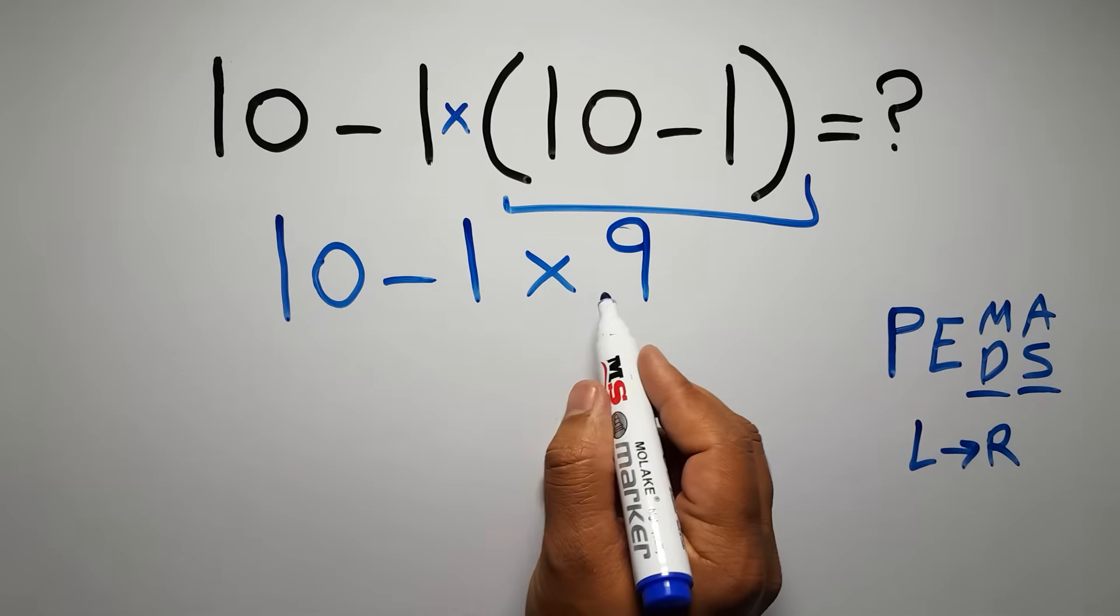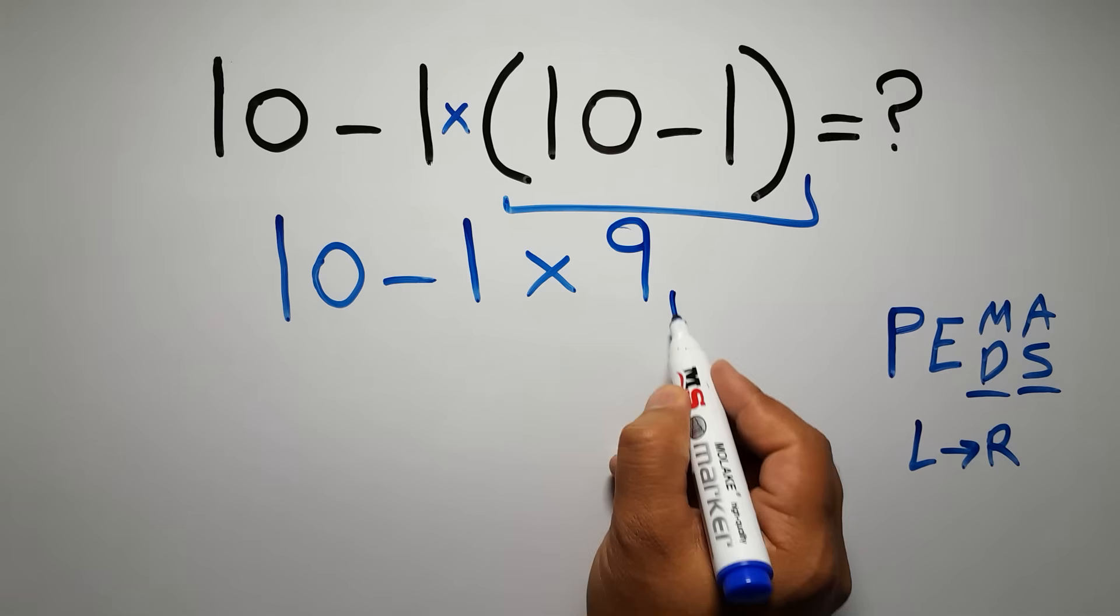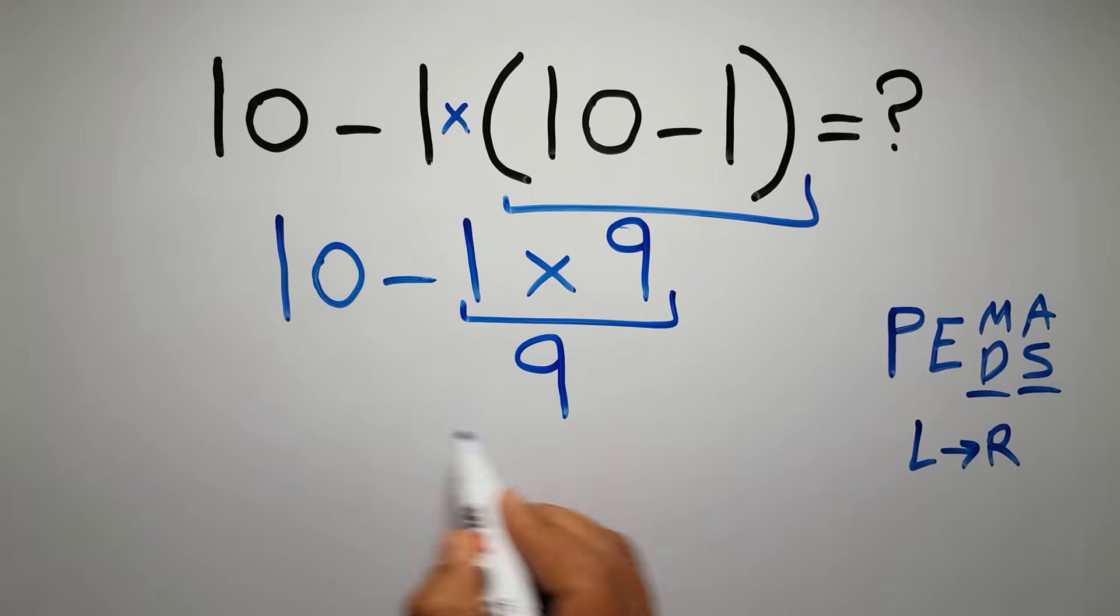So here, first we have to do this multiplication. 1 times 9 gives us 9, and 10 minus 9 equals 1, and this is our final answer to this problem.